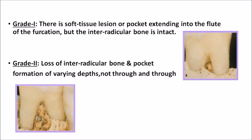Grade two: there is loss of interradicular bone and pocket formation of varying depth, but it is not through and through. Some bone has been lost but when you try to pass a probe from the buccal side it is not passing through to the lingual side. There is no through-and-through bone destruction. It is a cul-de-sac defect or a blind defect — when you insert a probe from one side it enters and gets trapped in a tunnel. That is a blind sac or cul-de-sac.